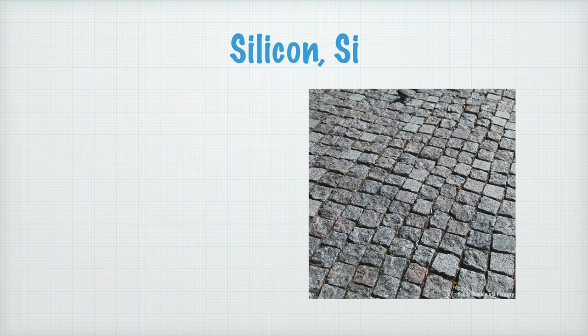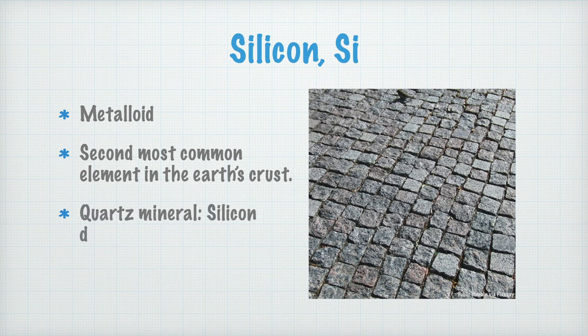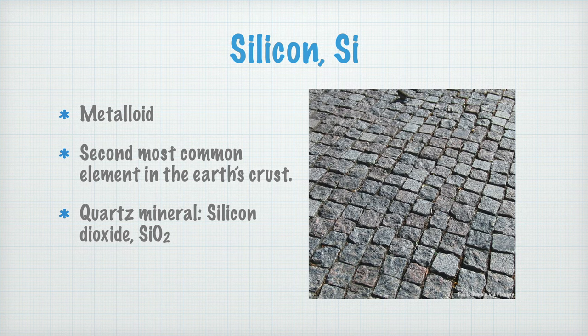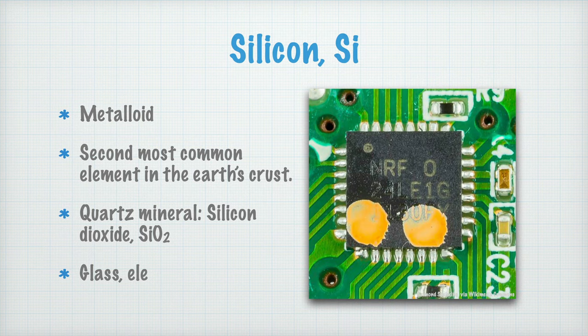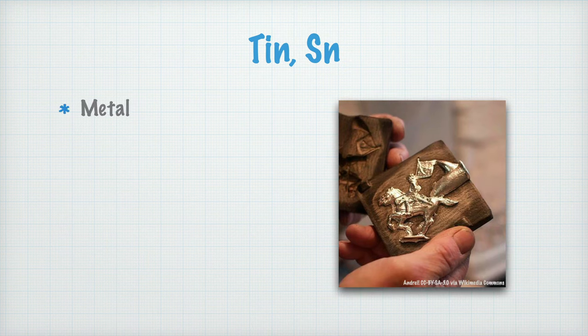Silicon, the next element in the carbon group, is a metalloid, and the second most common element in the Earth's crust. Only oxygen is more common. The mineral quartz, which is a part of granite, which you see here to the right, is made of silicon dioxide SiO2. Otherwise, silicon is used in glass and in electronics, where the transistors are made of silicon.